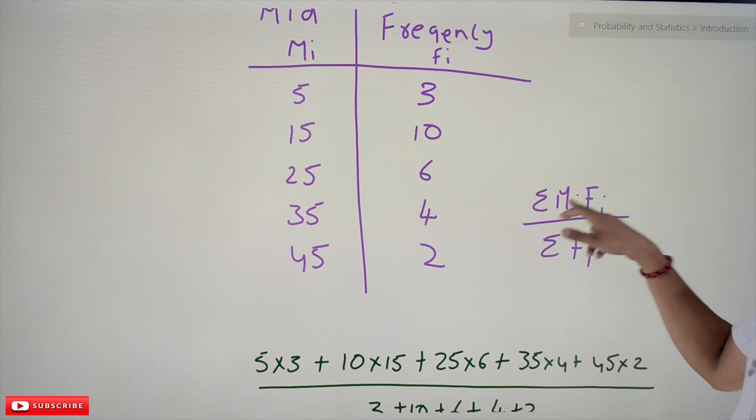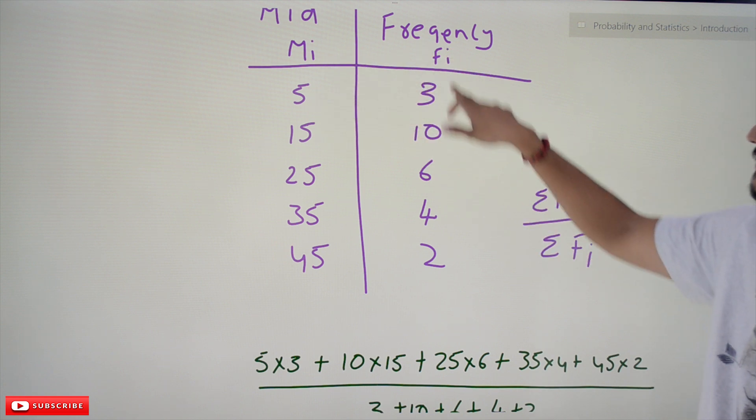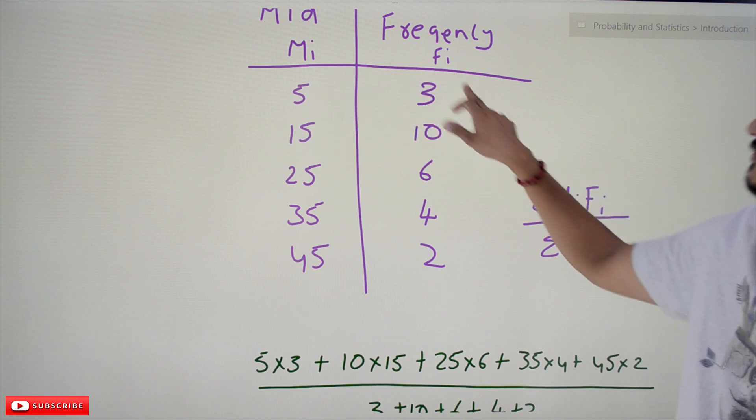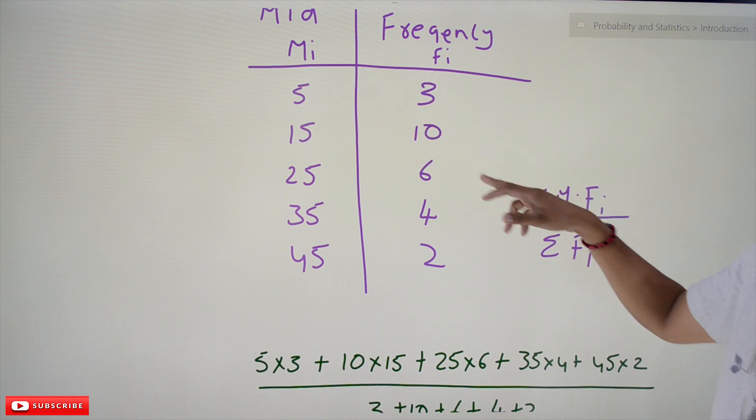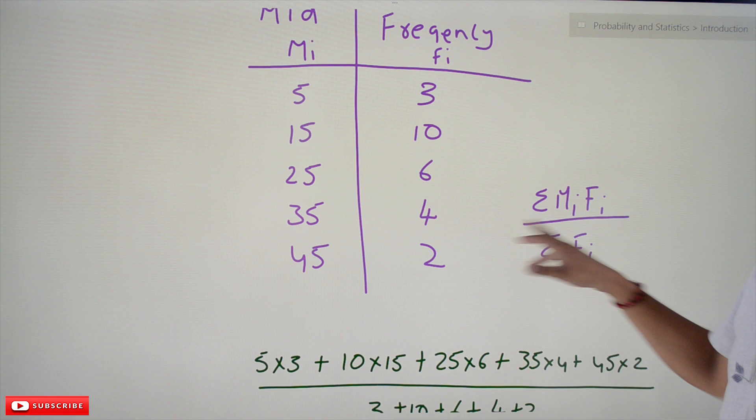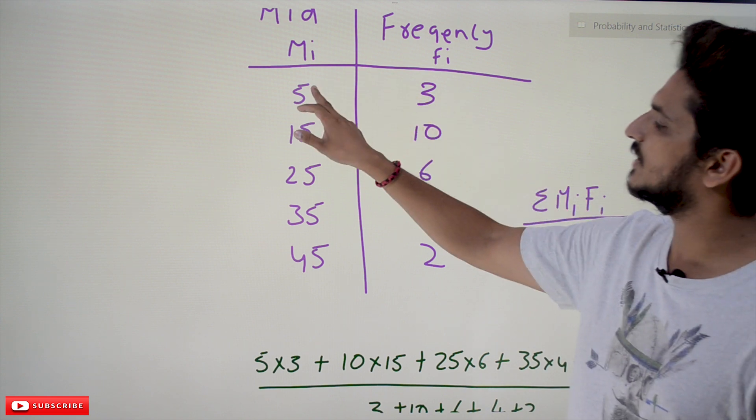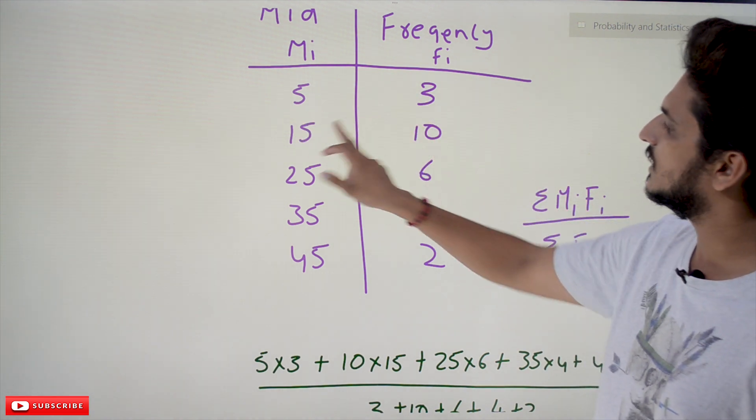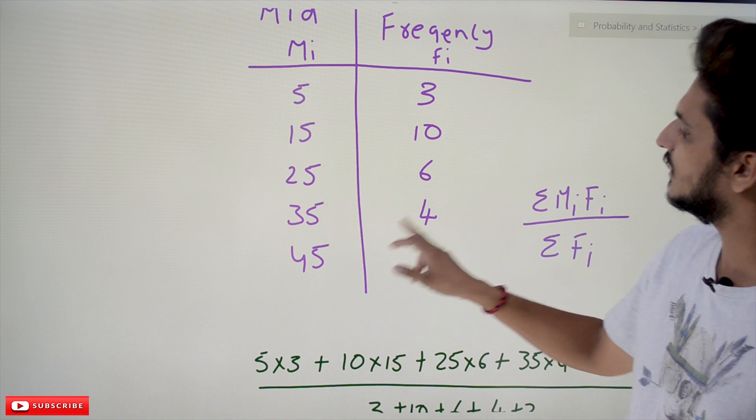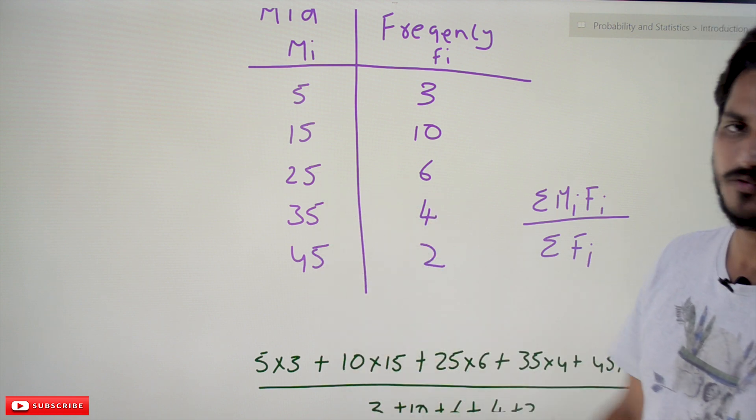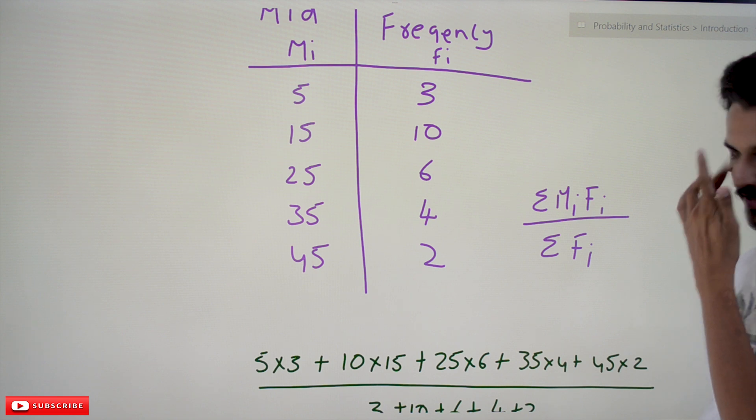Sigma Mi*Fi. Mi means these values, Fi means frequency values. 5 into... 5 multiplied by 3, like that. Summation of all these values: summation of 5 multiplied by 3, 10 multiplied by 15, 6 multiplied by 25, 4 multiplied by 35, 2 multiplied by 45. All these summation values will be taken divided by sigma of summation of frequency values.